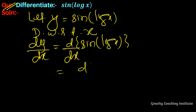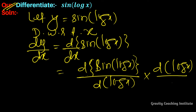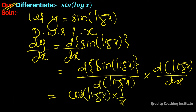Applying the chain rule: the derivative is cos(log x) multiplied by the derivative of log x, which is 1 upon x. So dy/dx equals cos(log x) upon x. That is the answer.